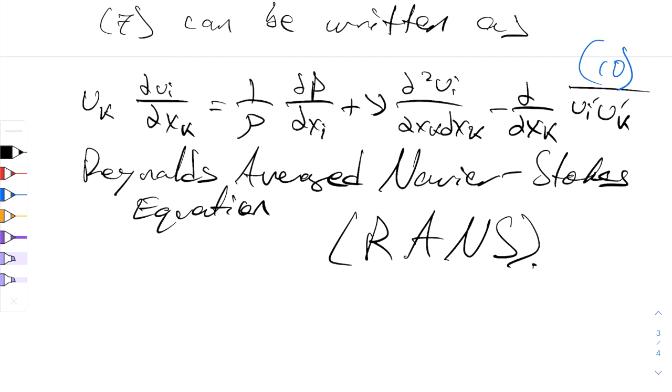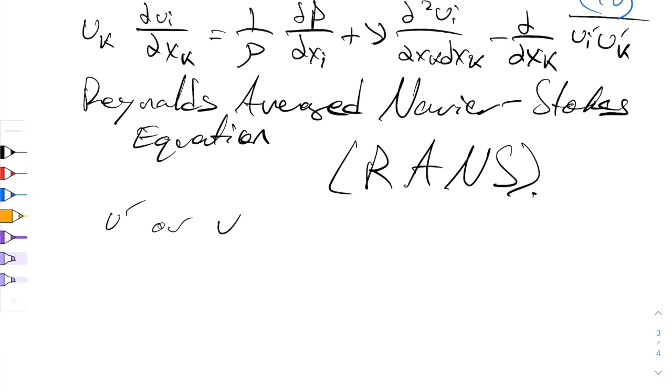So this equation describes how the time average velocity field u are influenced by the Reynolds stresses. So here we have a new definition. That's the Reynolds stresses, which of course is this term here, which we'll write down again for you. So that's ui prime uk prime bar.